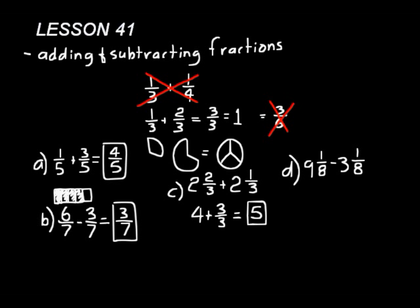Let's do one more — a subtraction problem. Nine and one-eighth minus three and one-eighth. Again, we do the whole number part separate from the fraction part. Nine minus three is six. Then one-eighth minus one-eighth: one minus one is zero. Zero over eight is just zero. So our answer is six.